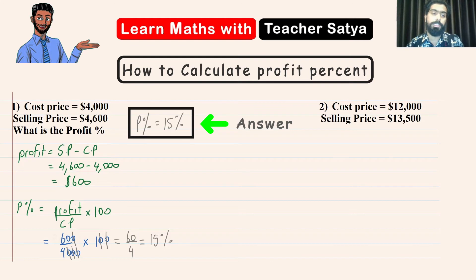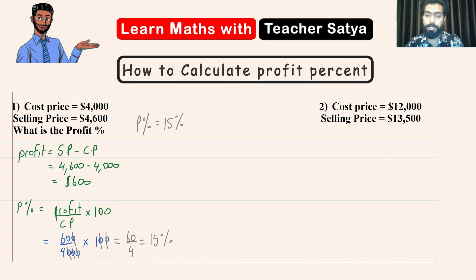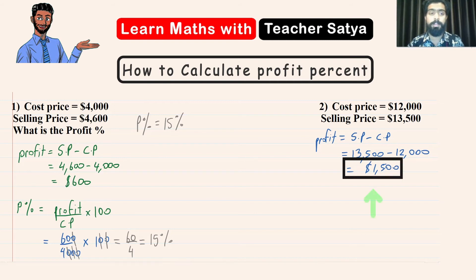Now going ahead to question number 2 we are going to do the exact same steps. First what we are going to do is we are going to find the profit value. So the profit value is equal to the selling price minus the cost price. In this case we have $13,500 minus $12,000 which is equal to $1,500. Now in order to find the profit percent I am going to put in the formula which is profit over the CP multiplied by 100.